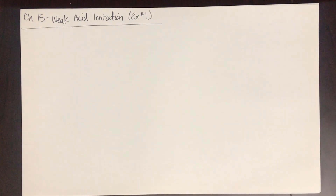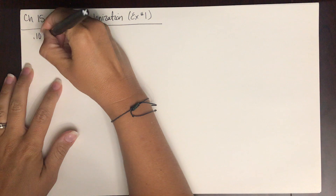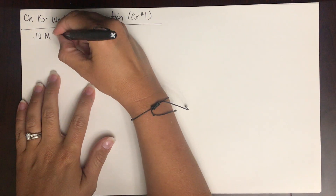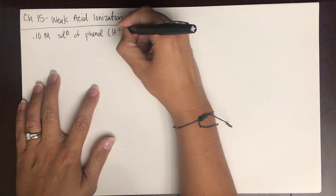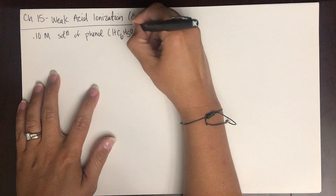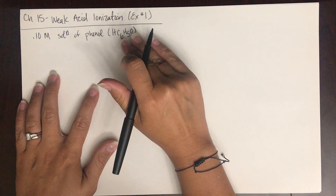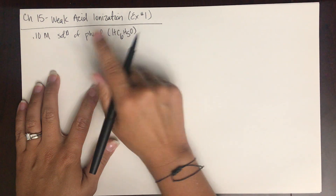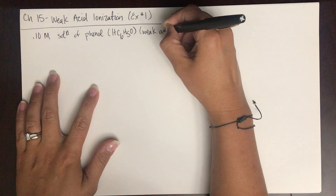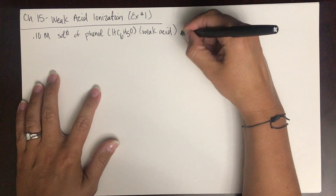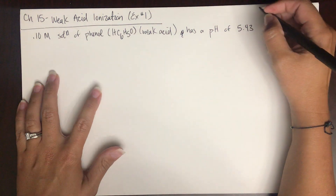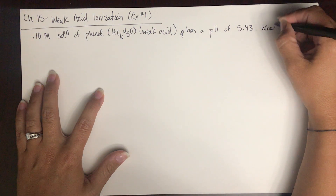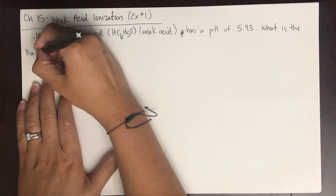Let's do an example of a weak acid ionization calculation. We have a 0.10 molar solution of phenol, which is a weak acid. It is not important that you know the name or the formula — I would tell you in the problem that this is a weak acid — so that you would know that it has a pH of 5.43. What is the Ka of phenol?